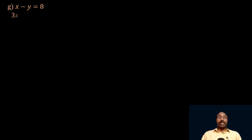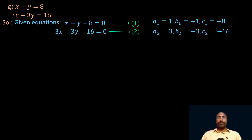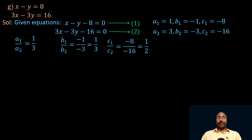Take the next one. x minus y equals 8 and 3x minus 3y equals 16. Writing in standard form and comparing coefficients: a1/a2 equals 1/3, b1/b2 also equals 1/3, but c1/c2 equals 1/2. We can observe that a1/a2 equals b1/b2 but not equal to c1/c2. So the given equations are inconsistent.